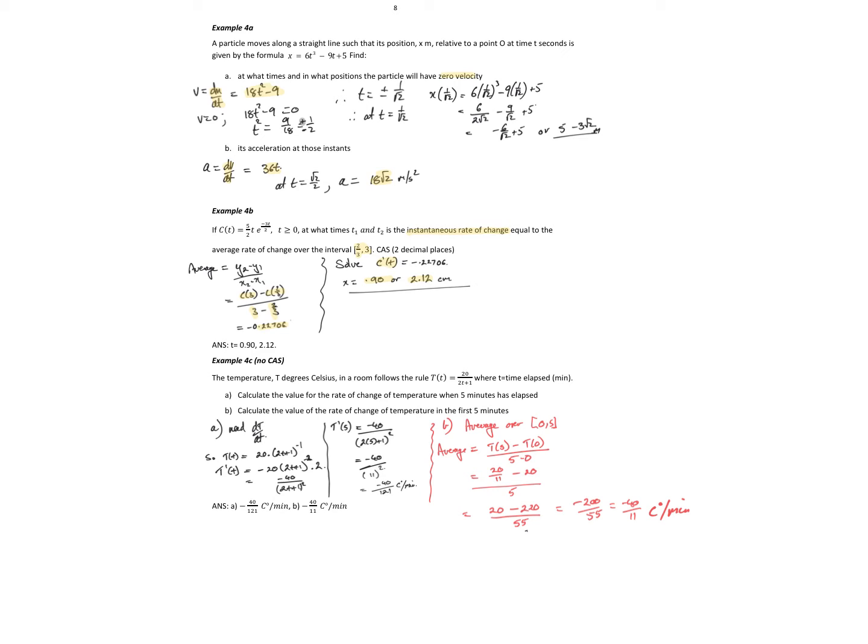This one without a CAS. So the temperature in a room is followed by t of t equal to 20 over 2t plus 1, where t is the time elapsed in minutes. So as t increases, my temperature is gradually dropping. So maybe we've turned the heater off. Calculate the value for the rate of change of temperature when 5 minutes has elapsed. Calculate the rate of change at the 5-minute mark. So that's the instantaneous.